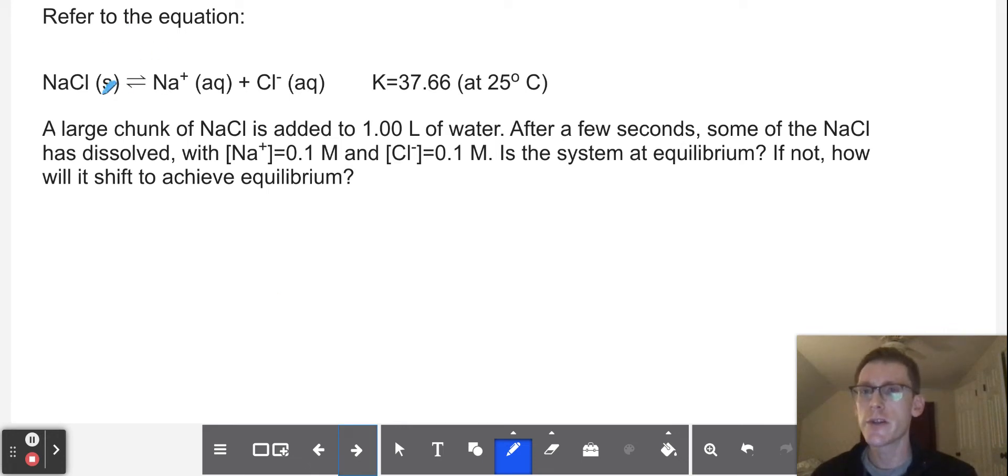So let's say we've got this equation for the dissolution of salt into aqueous sodium and chloride ions. For this, the equilibrium constant is 37.66 at 25 degrees Celsius. A large chunk of sodium chloride is added to 1.00 liters of water. After a few seconds, some of the NaCl has dissolved. There's still a bunch of undissolved salt, but the part that has dissolved has left us with 0.1 molar sodium and 0.1 molar chloride concentration.